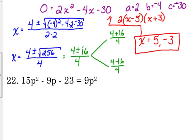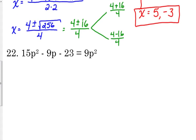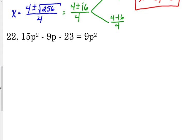Now the next two won't factor. I promise you they don't factor. So let's look at what we get for these. Number 22, we have 15p squared minus 9p minus 23 equals 9p squared.